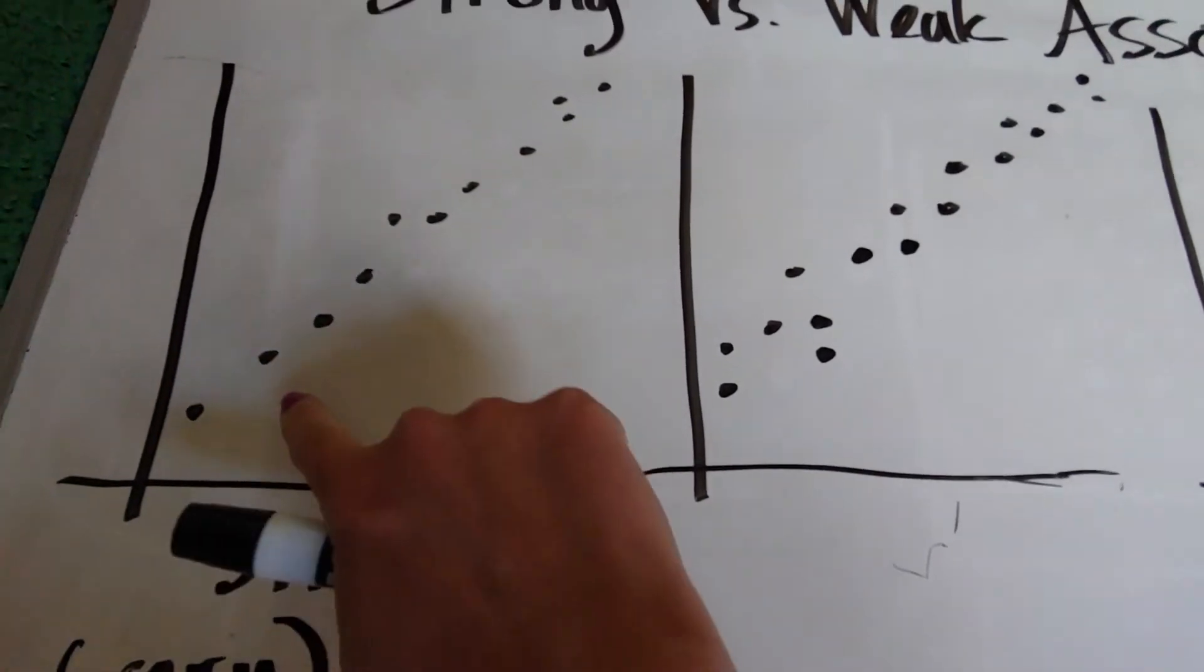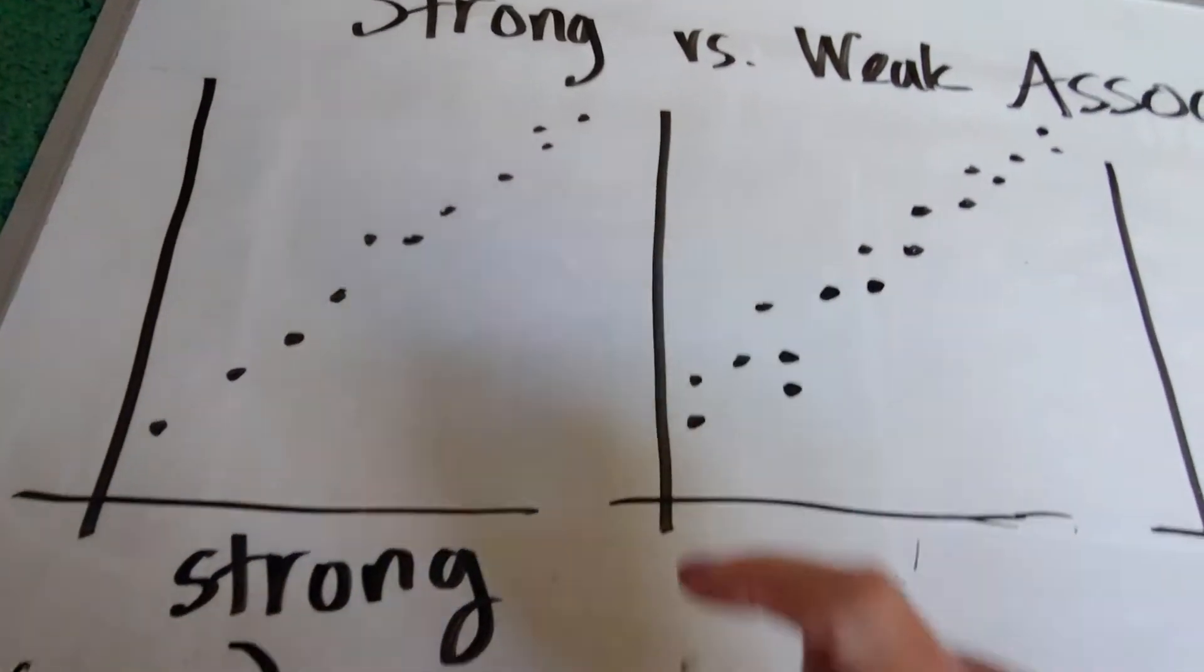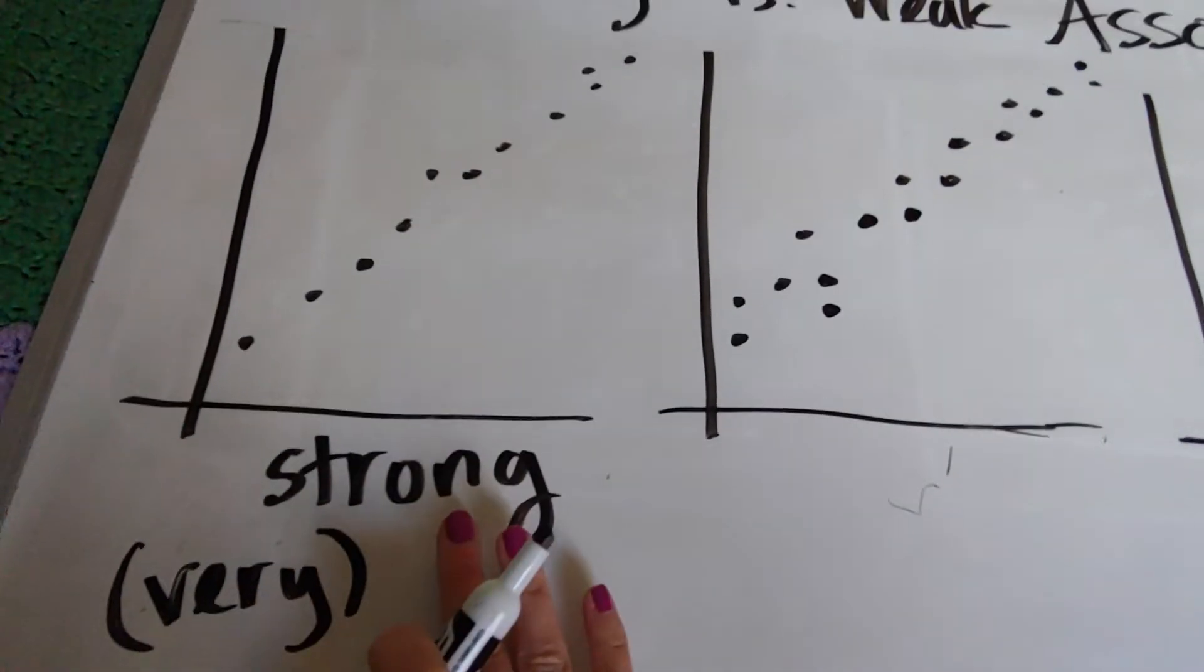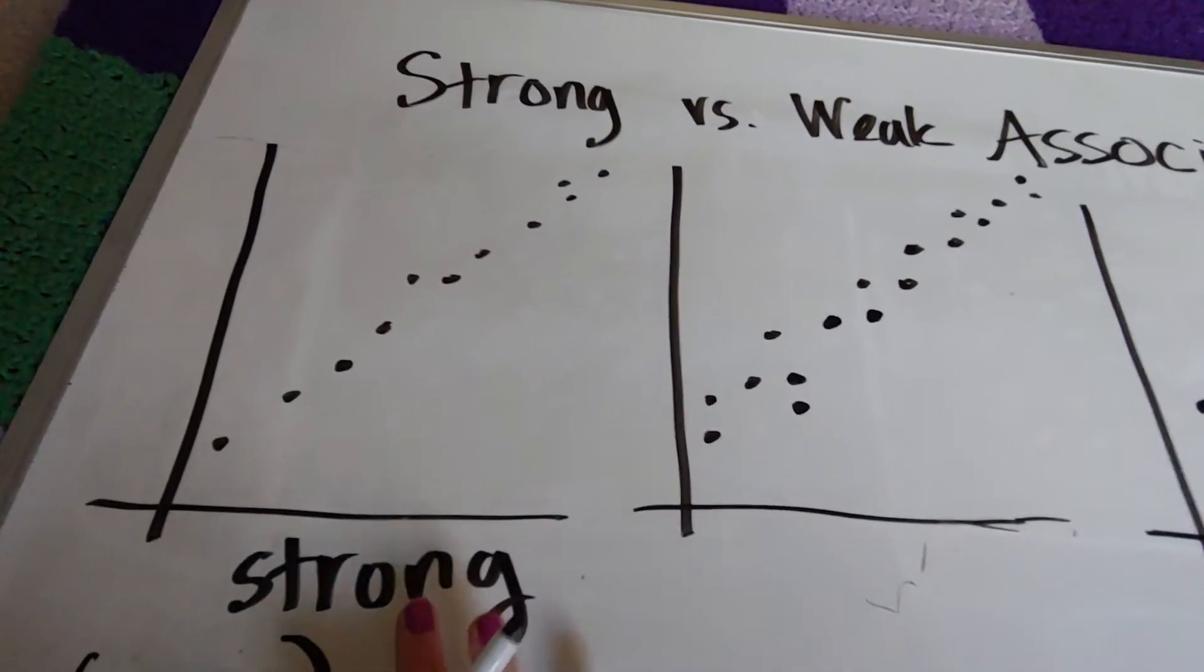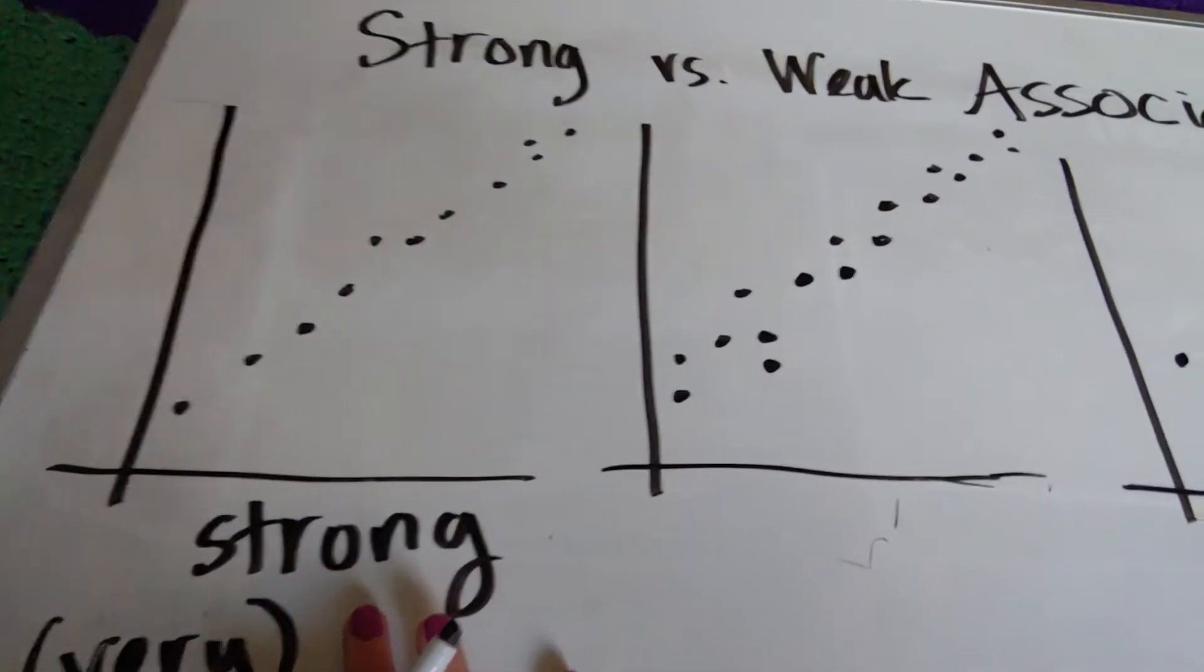Very strong, because it's almost a perfect line. We've got a few scattered on the edge. So this is going to be a very strong association. So more line-like, the stronger it is.